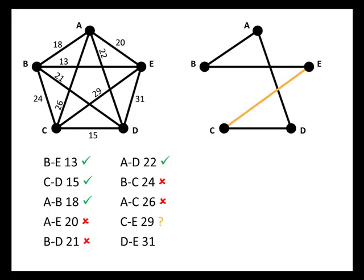Next we consider the edge from C to E. Does that give us a circuit? It does, and it gives us a circuit that contains all of the vertices — A, B, C, D, and E. So that's the Hamiltonian circuit we're looking for. We put a check mark next to that one, and this is the Hamiltonian circuit we get from the sorted edges algorithm. Notice that we never actually got to consider the edge from D to E — it doesn't have a check mark or an X because we never needed to reach that most expensive edge. Sometimes you'll need to go all the way to the end of the list, and sometimes you won't.